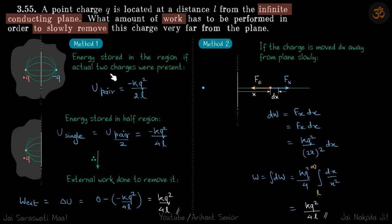U due to the pair of these charges is minus kQ² by 2l. But in reality, energy is only stored in half region, only in left half. In right half there is no electric field present. The magnitude is going to be half of this, so U of a single side is U_pair by 2. If you just divide this by 2, you will get minus kQ² by 4l. This is U on the single side.